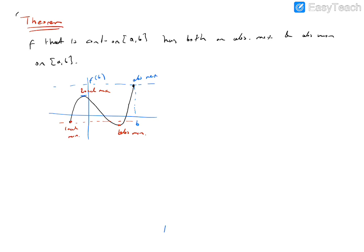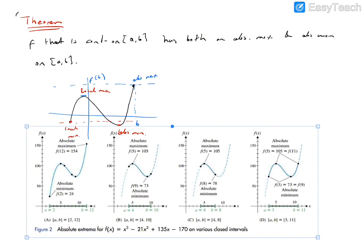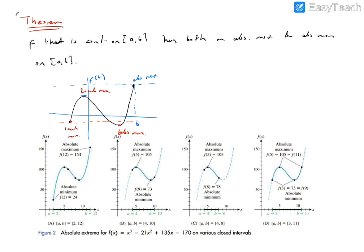Let's take this example. For the function x cubed minus 21x squared plus 735x minus 770, we have three graphs according to the domain. If the domain is from 2 to 12: this is the absolute minimum, this is the absolute maximum, this is a local maximum, and this is a local minimum. If the domain is from 4 to 8: this is the absolute maximum and this is the absolute minimum, and this is a local minimum.